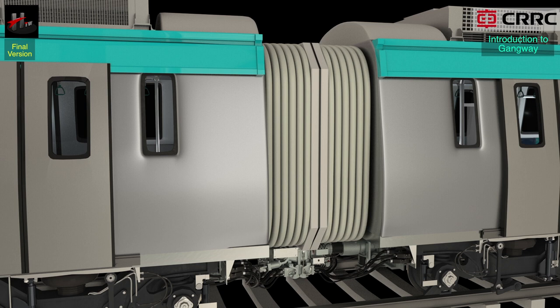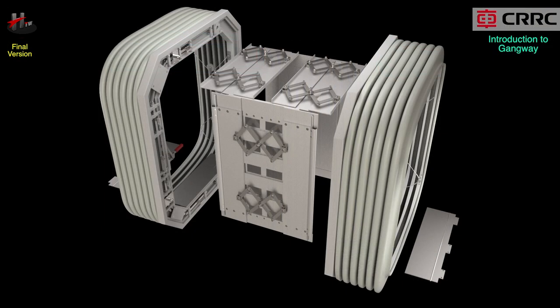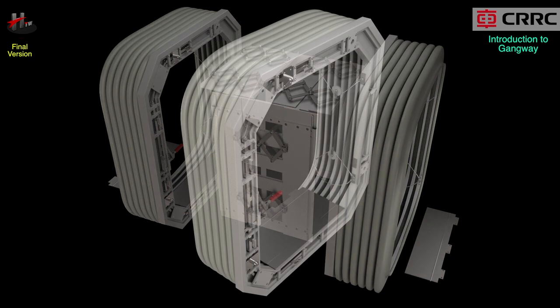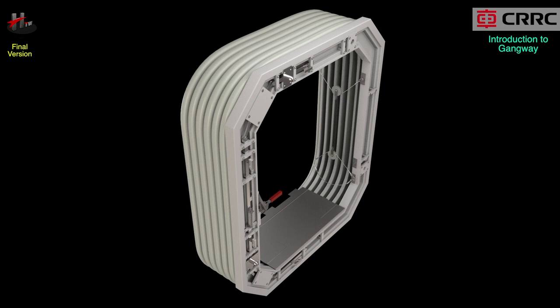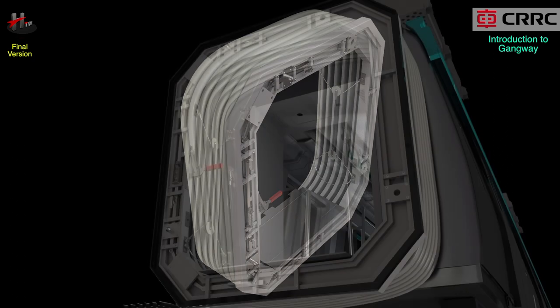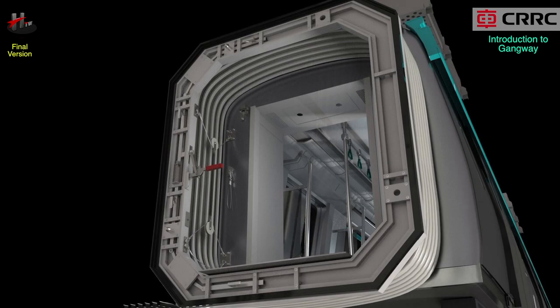The main parts of the gangway and their functions are: the outer gangway assembly. The outer gangway assembly consists of the bellow assembly, the end frame, and the coupling frame.